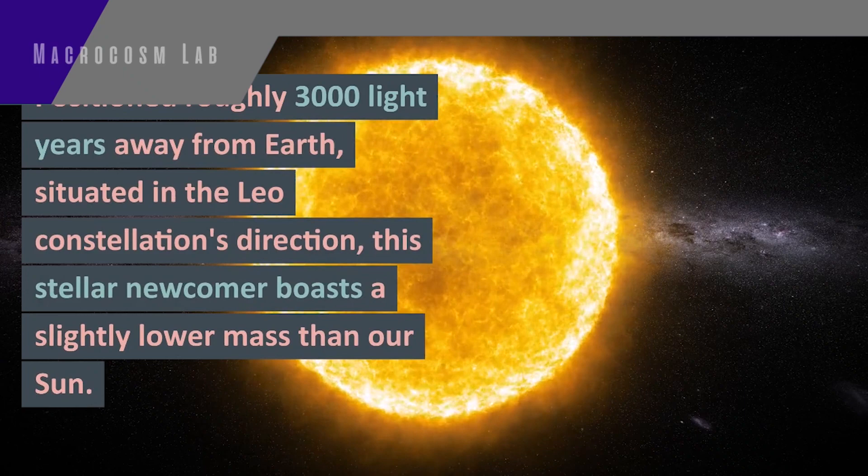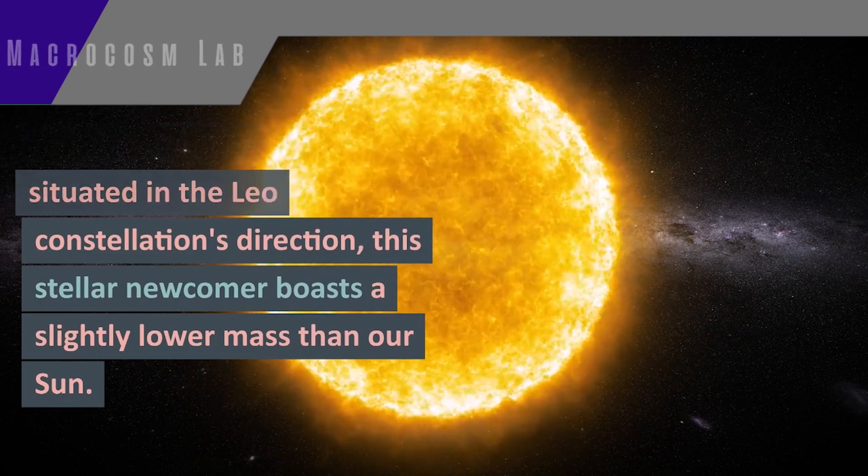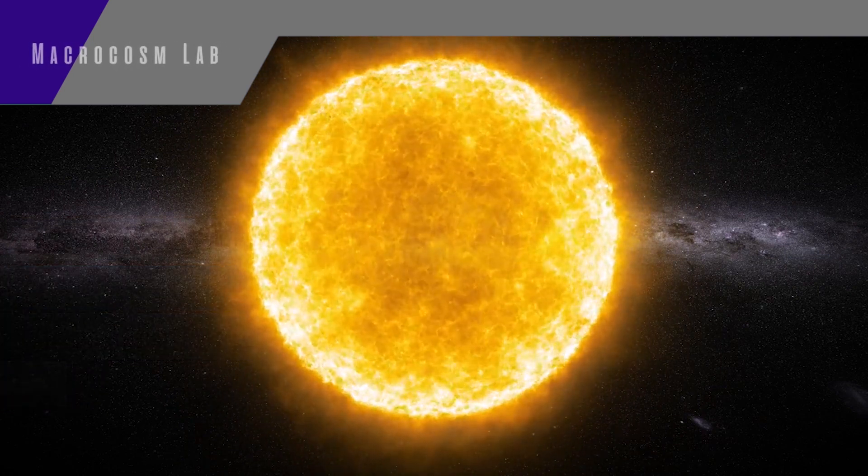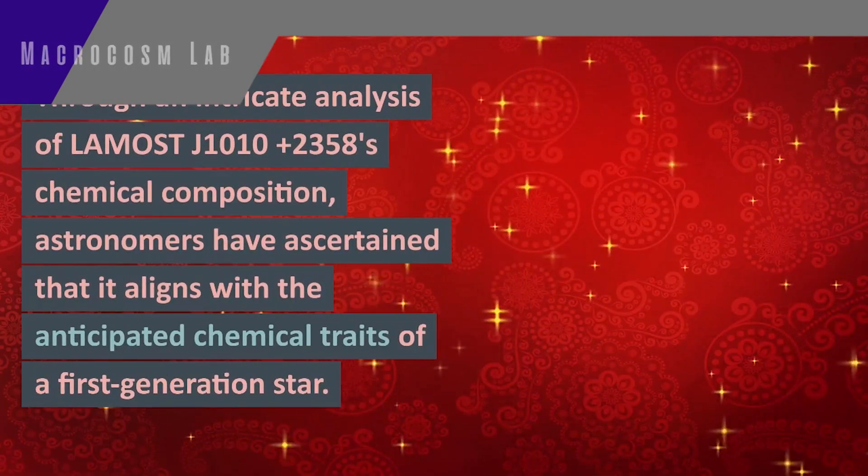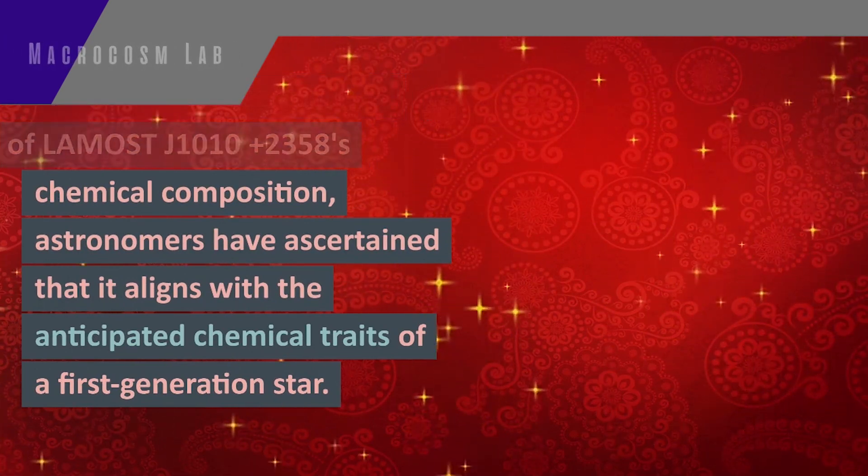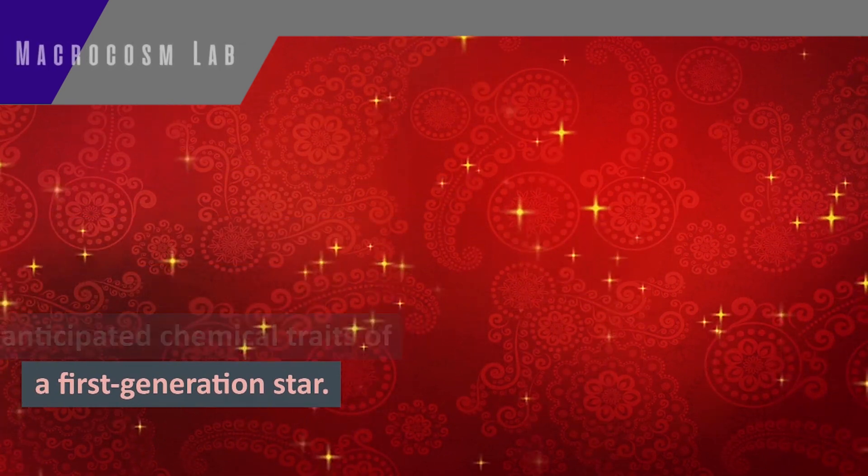Positioned roughly 3,000 light-years away from Earth in the Leo constellation's direction, this stellar newcomer boasts a slightly lower mass than our sun. Through an intricate analysis of LAMOST J-1010-1358's chemical composition, astronomers have ascertained that it aligns with the anticipated chemical traits of a first-generation star.